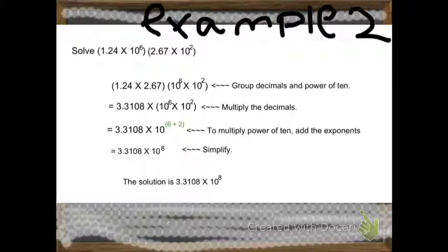So, we get these answers. 3.3108 times 10 to the 6th power times 10 to the 2nd power.